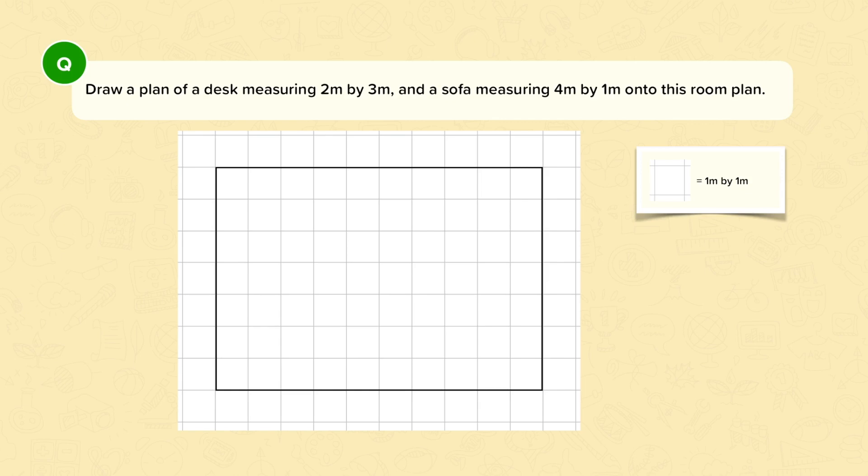For example, here we are asked to draw a plan of a desk measuring 2 by 3 meters and a sofa measuring 4 meters by 1 meter onto this room plan. We're also given this scale which tells me that 1 centimeter on the grid is worth 1 meter by 1 meter in real life.